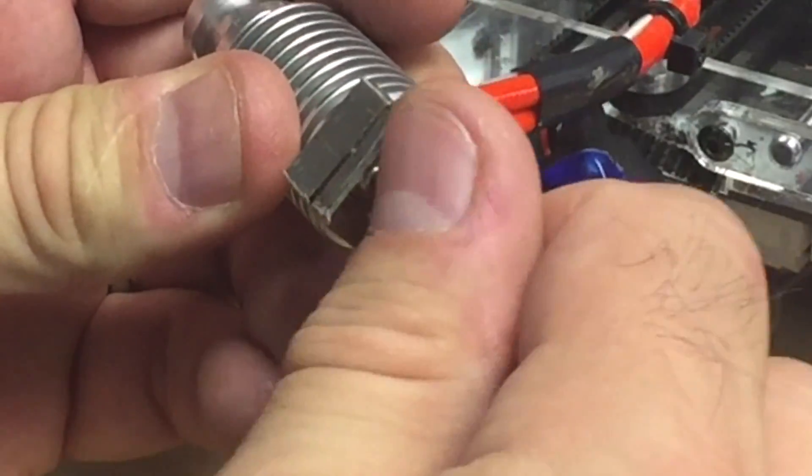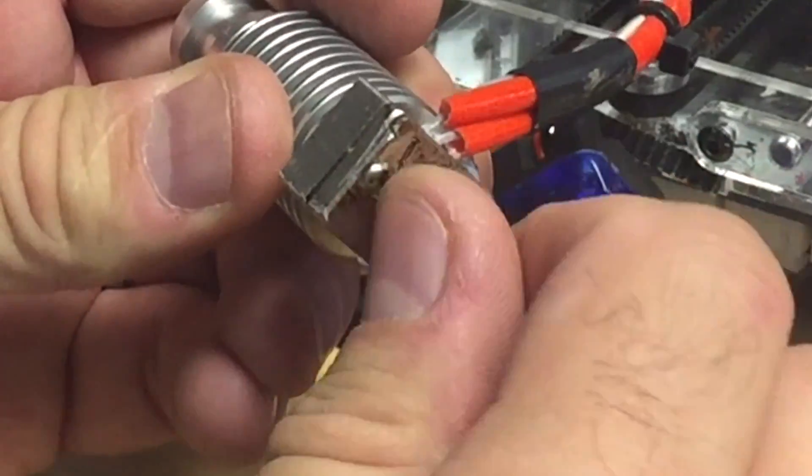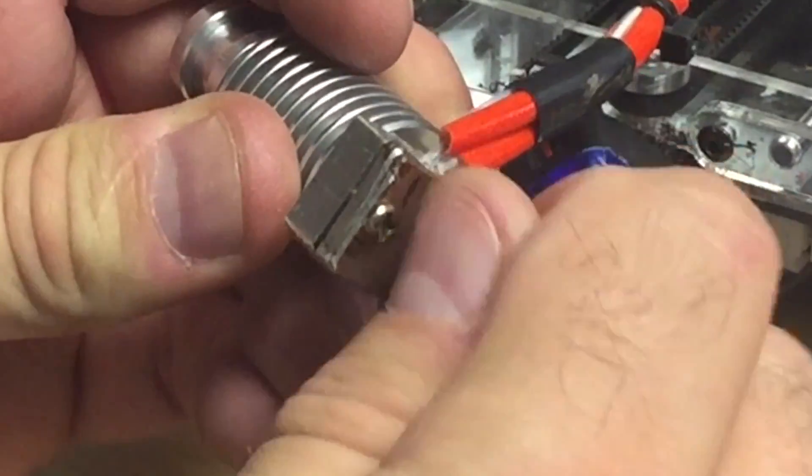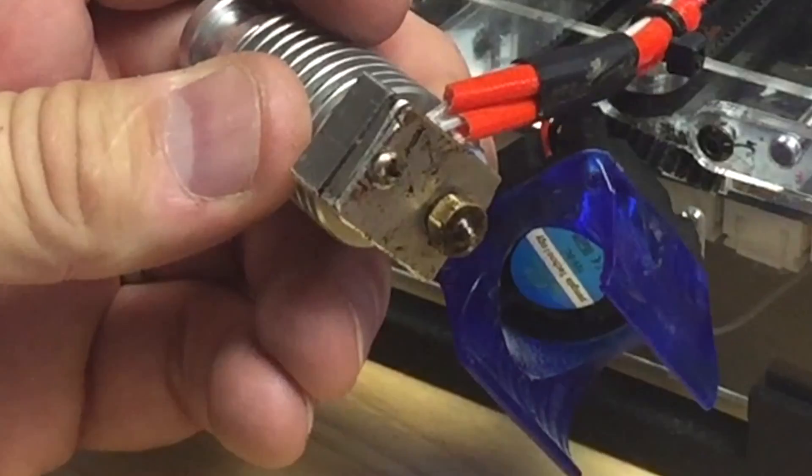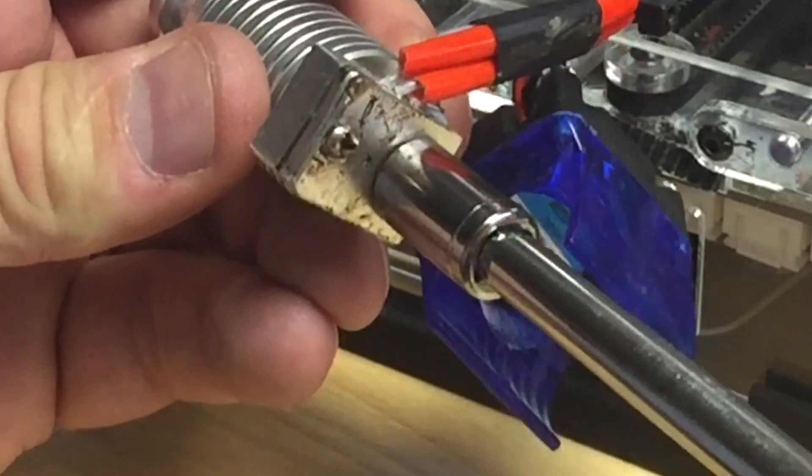Once I've done that then I'm ready to start assembling it. Put the heat sink back on, and then by hand I tighten the nozzle back into the hot end. As a final step, I get the 7 millimeter socket and just give it the last couple turns to tighten it against the rest of the unit.